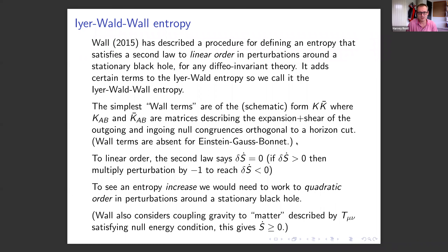This produces an entropy satisfying the second law to linear order. But at linear order the second law just says the entropy doesn't change: if delta S-dot were positive, multiplying the perturbation by minus one would give something negative, violating the second law. So at linear order the entropy is constant. To see a genuine entropy increase, you have to go to quadratic order in perturbations around a stationary black hole, and that's what I'll be describing today.